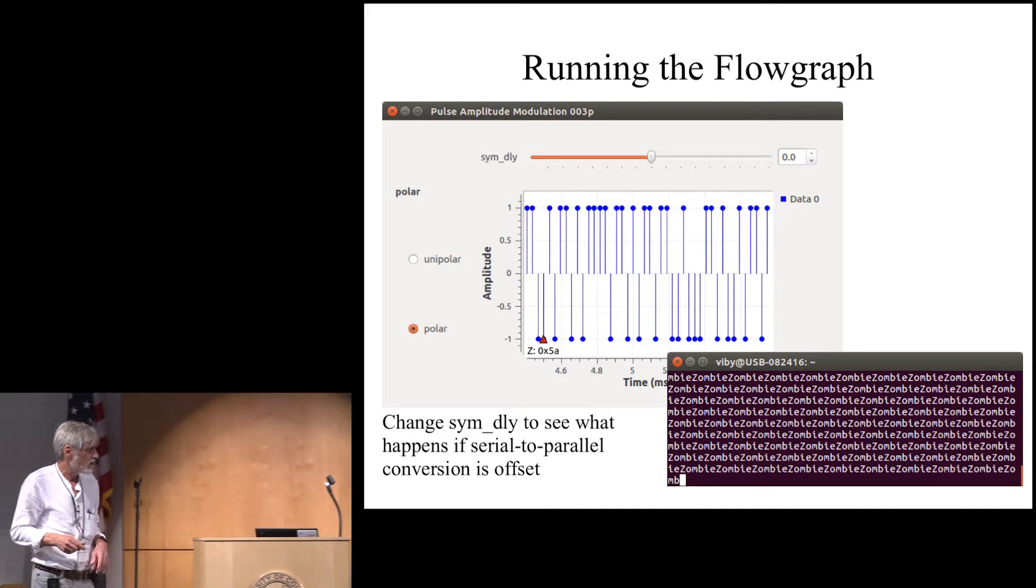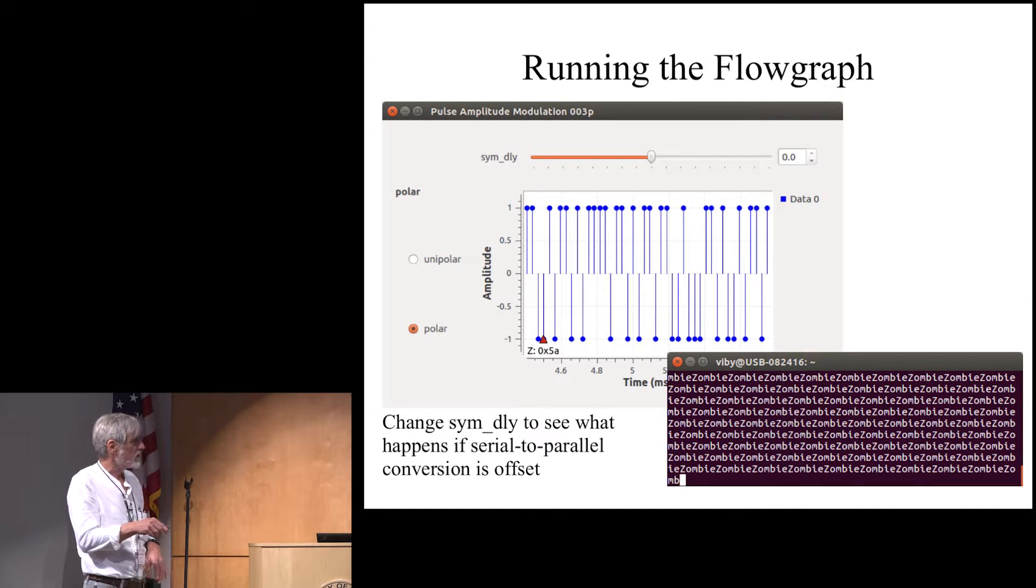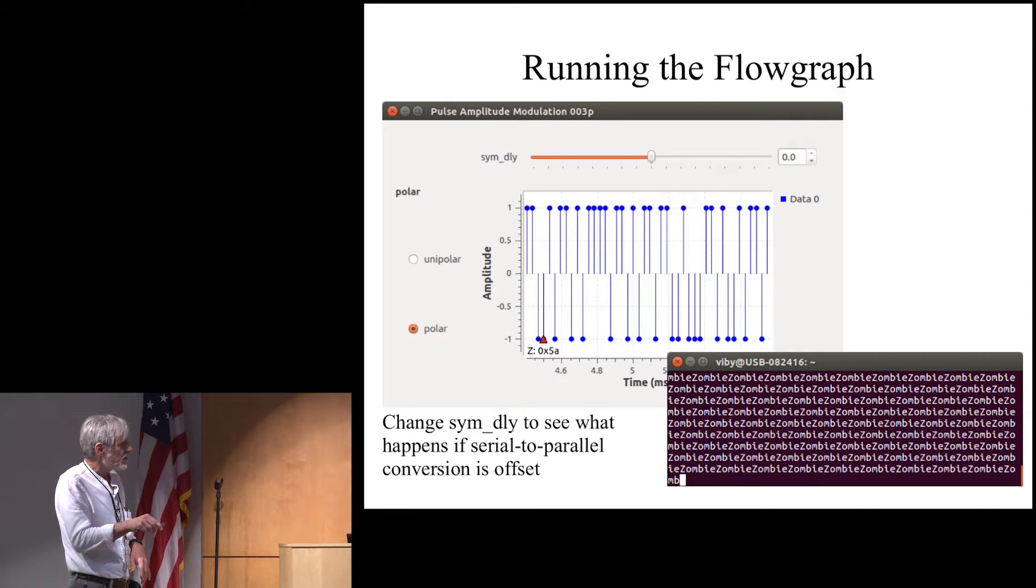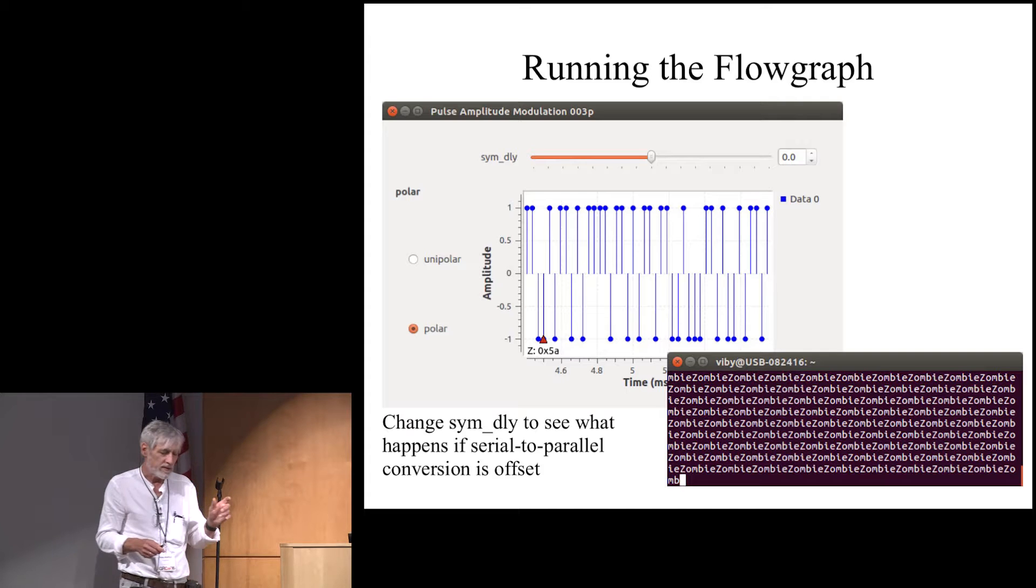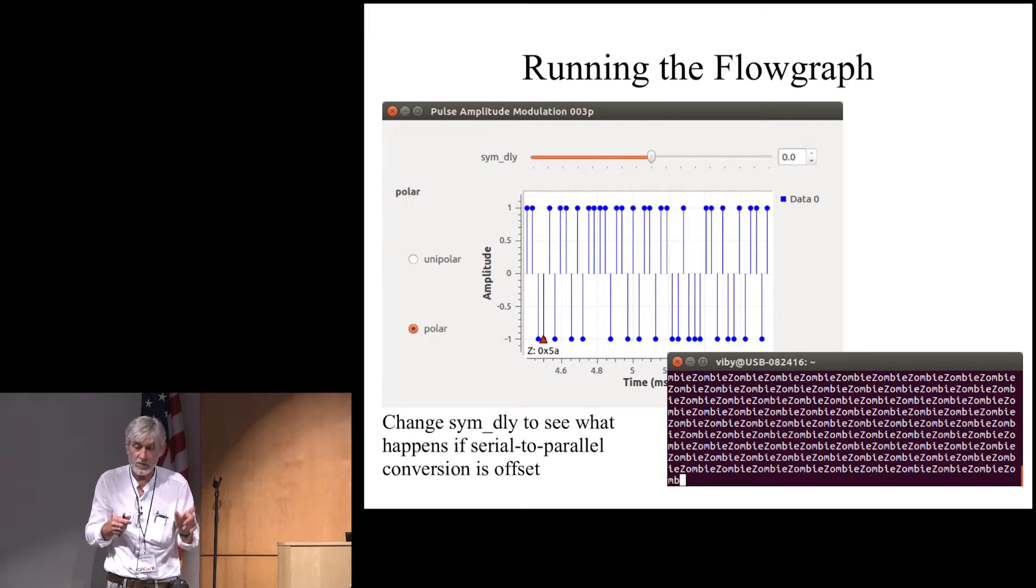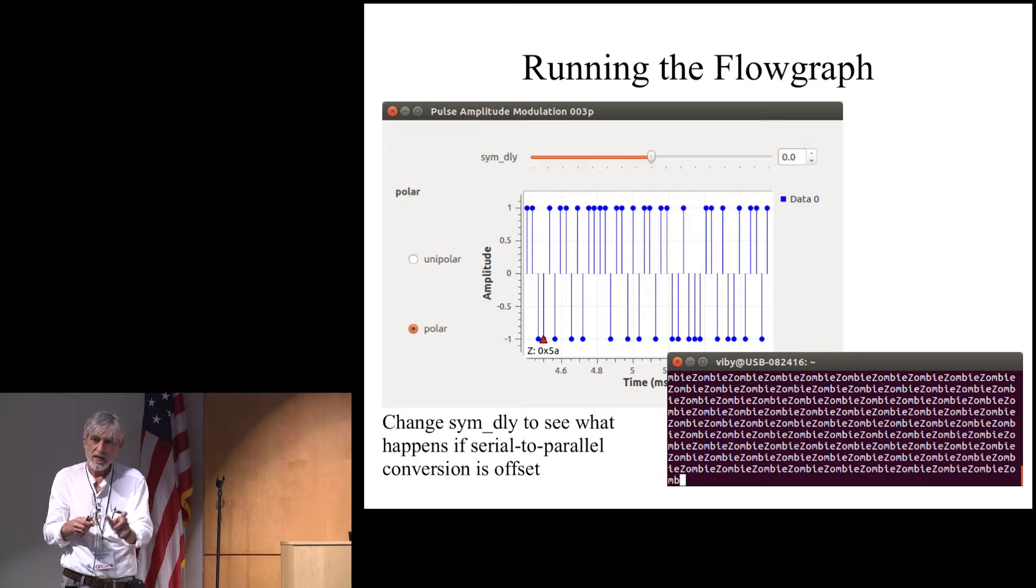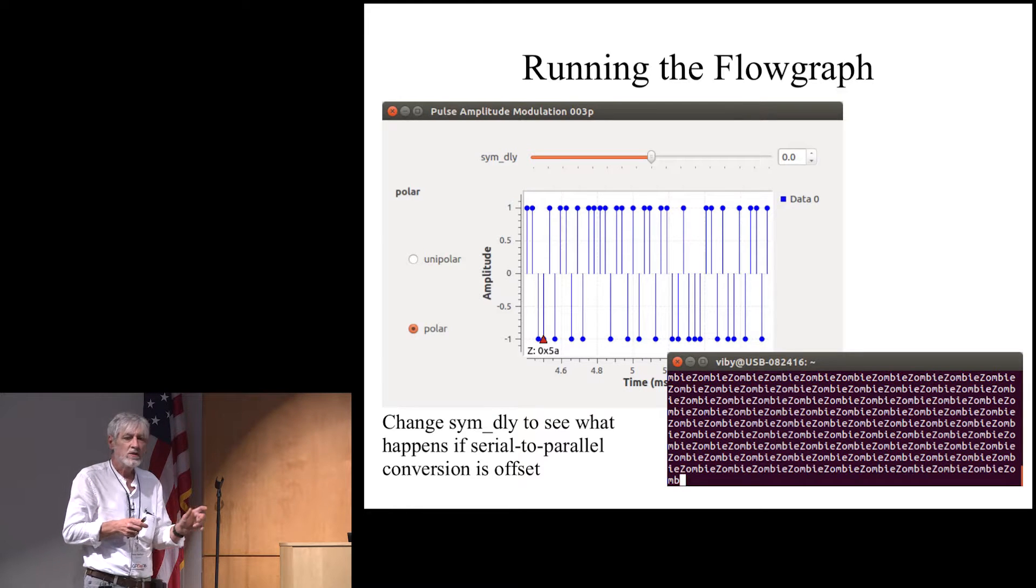I don't have a live version of this particular one, I will have one a little bit later if that is going to work here. But that's basically what you get to see now. You see what the transmitted discrete time signal is. You see what the decoded text is. And then you have here a slider where you can choose the symbol delay.